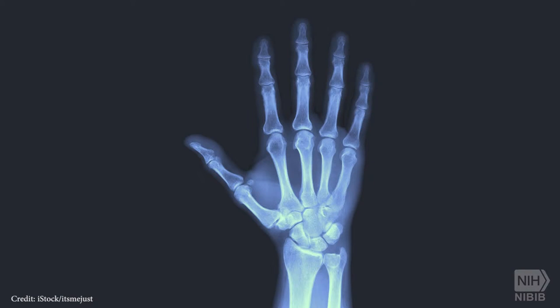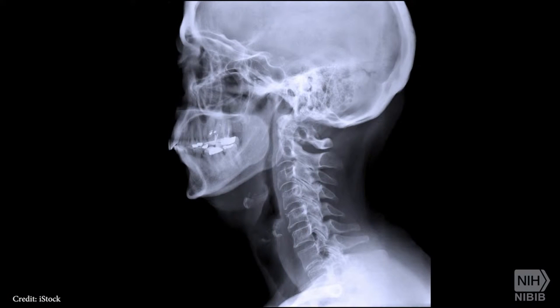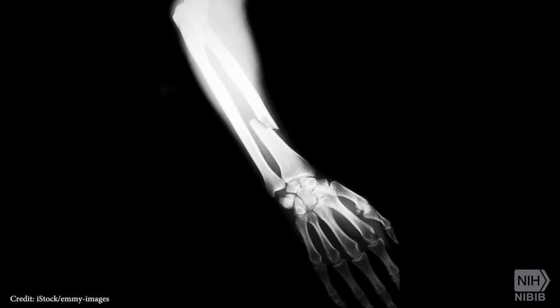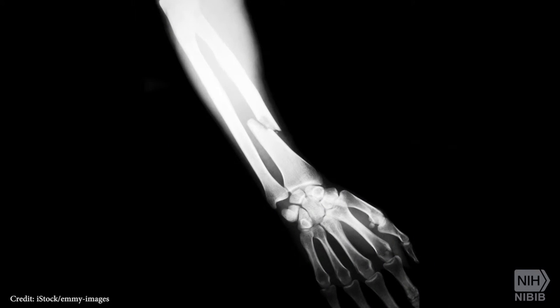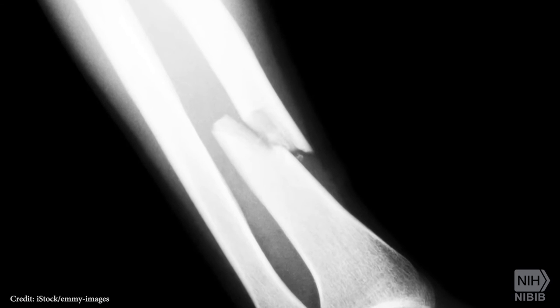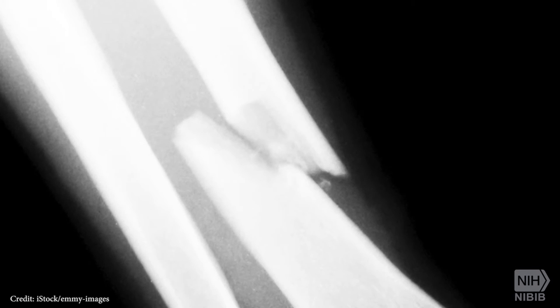Bones are clearly visible while soft tissues, such as muscle, are shadowy. As a result, the two-dimensional images formed by the x-rays are quite useful in revealing structures within the body and can easily display fractures in bones.